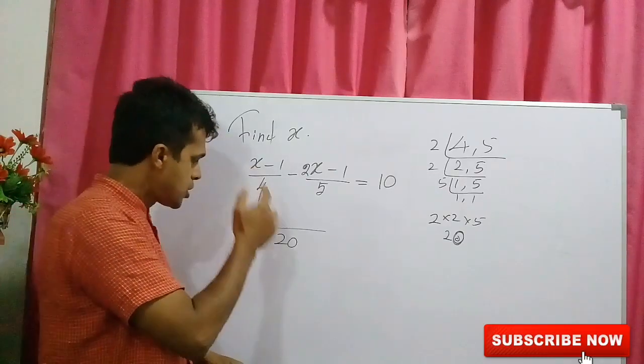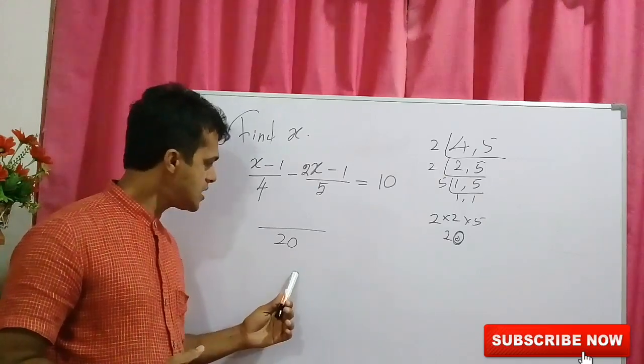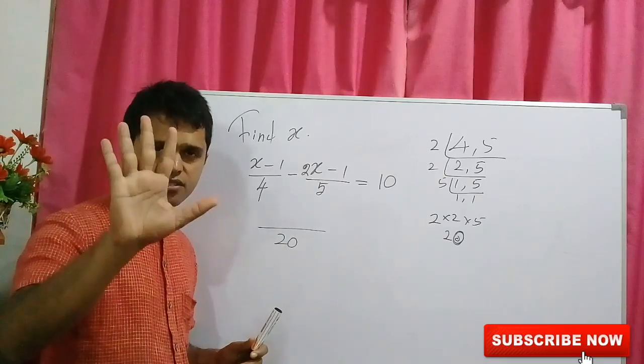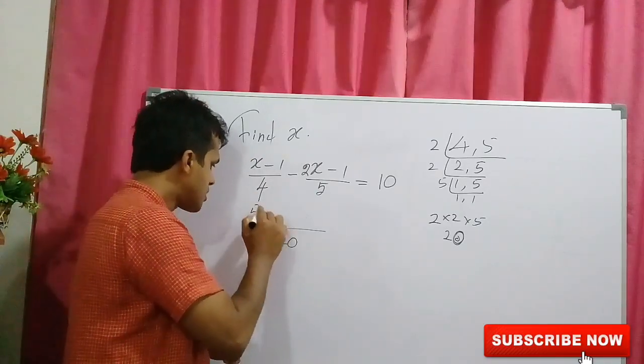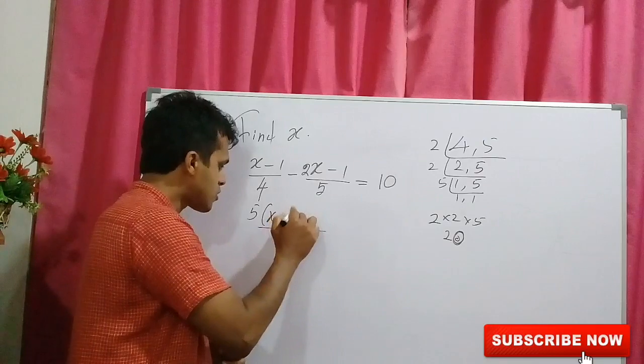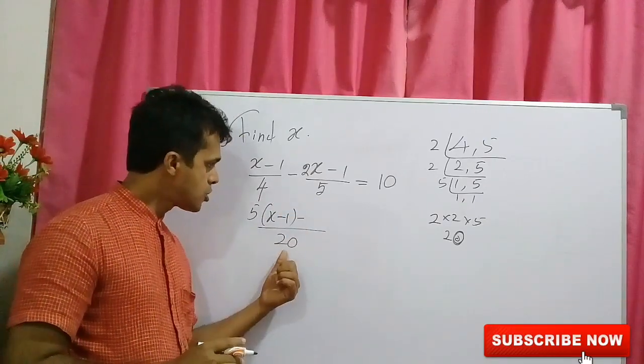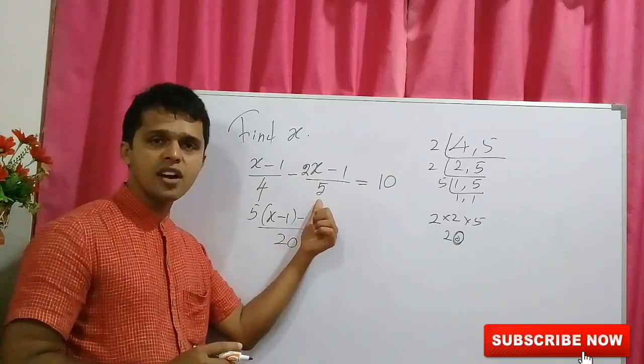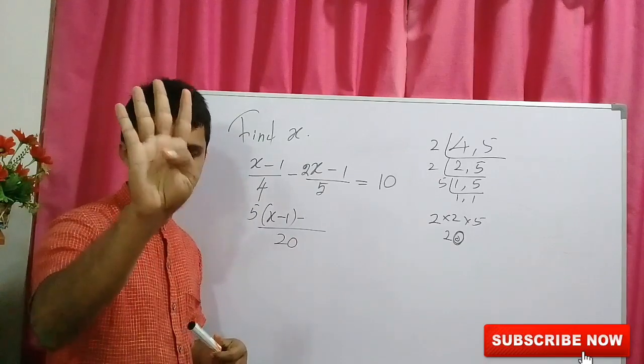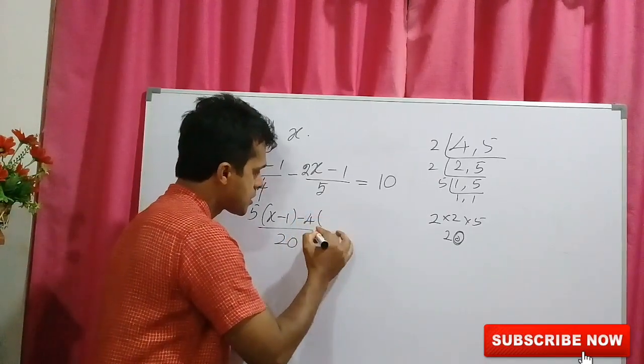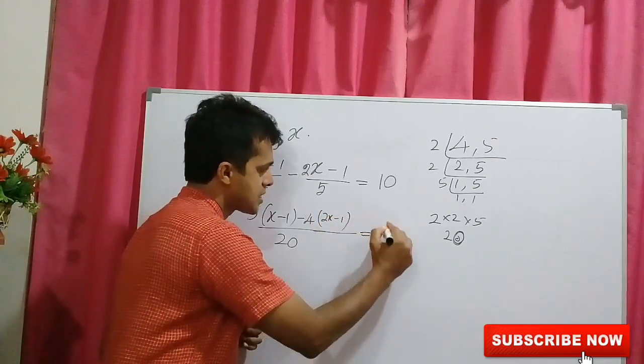Now, 20 over 4, 20 is divided by 4. 20 upon 4 is 5. 5 times x minus 1. Here negative, you could see that. 20 over 5. 20 over 5. What's that? 4.